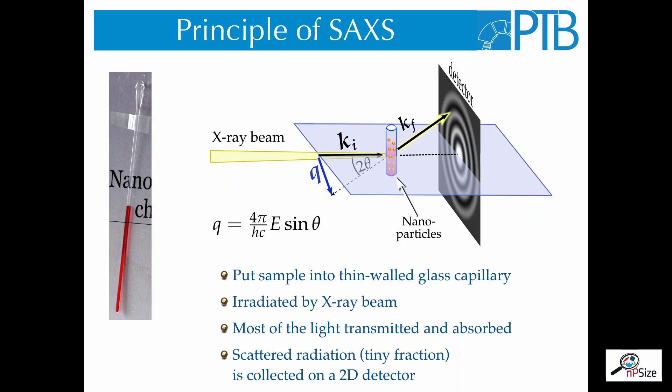On this slide, you can see the principle of a SAXS measurement. First, the sample is filled into a glass capillary and then it is irradiated by the X-ray beam from the synchrotron. Most of the synchrotron light is directly transmitted through the sample or absorbed in the sample, but also a tiny fraction of radiation is scattered under small angles. The scattered radiation is then collected onto a two-dimensional detector.